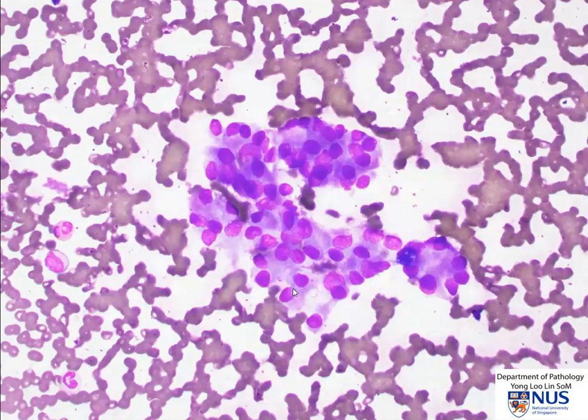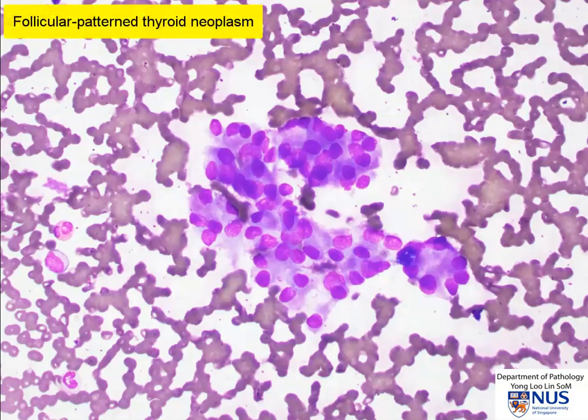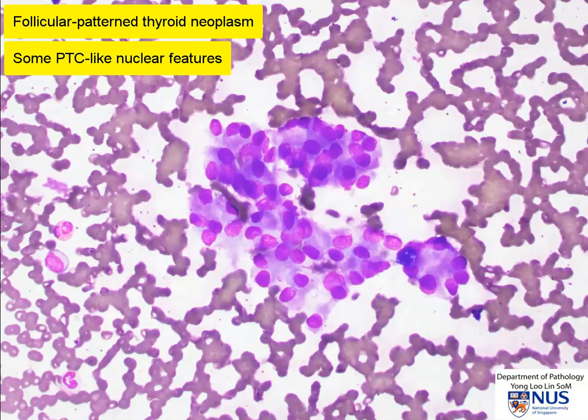So what we have here is a follicular patterned neoplasm with some nuclear features that are worrying for papillary thyroid carcinoma. In this instance, because we do not have the full house features of a classical papillary carcinoma, such as large syncytial sheets, papillary tissue fragments, and fibrovascular cores, it is difficult to make an outright diagnosis of PTC because we know that there's a possibility of differential diagnosis.